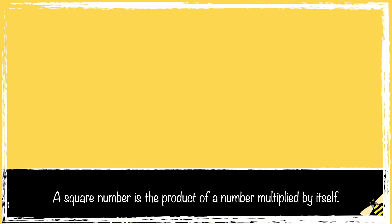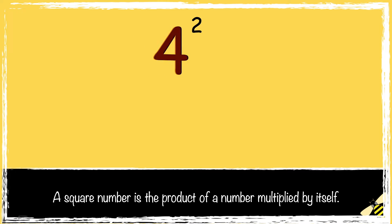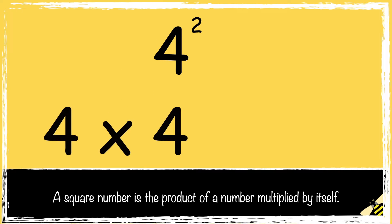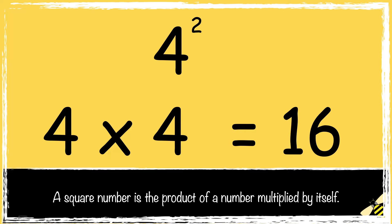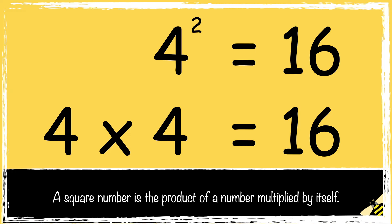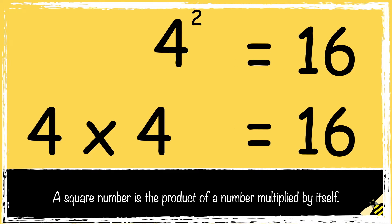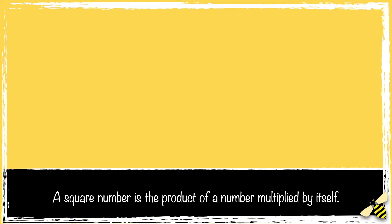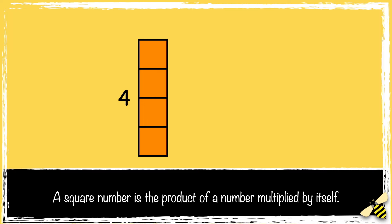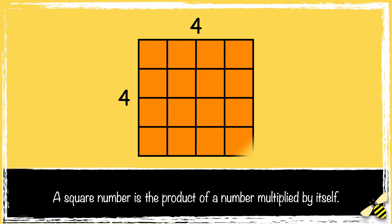Here's another one. 4 squared is 4 multiplied by 4. 4 times 4 is 16, so 4 squared is 16. 4 multiplied by 4 makes a square of 16.